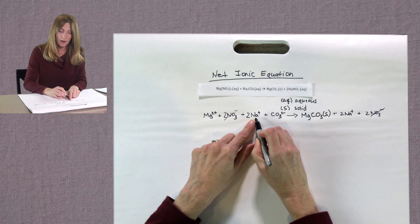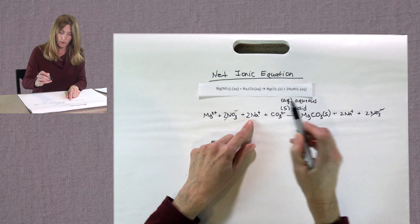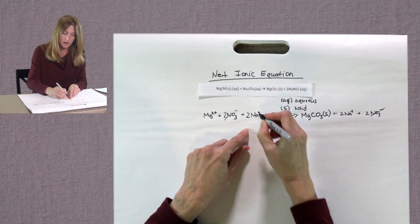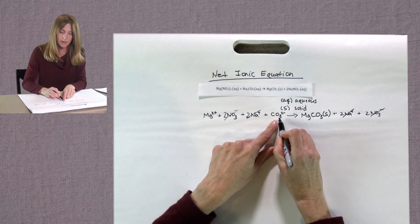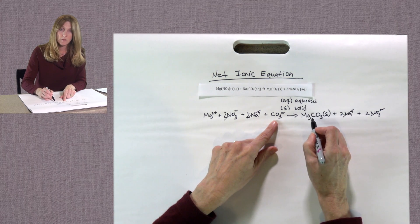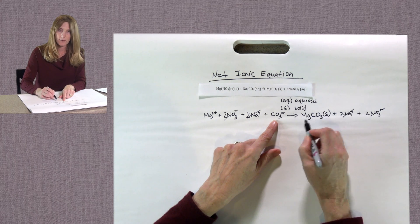Next are our sodium ions. We have sodium ions on the reactant side. We also have sodium ions on the product side. So we can get rid of those. And then last is the carbonate ion. It is involved in this ionic compound. So we cannot get rid of that.